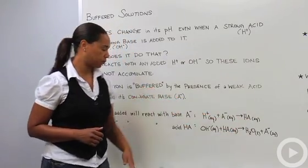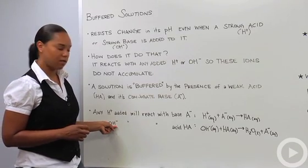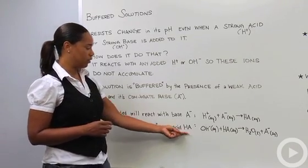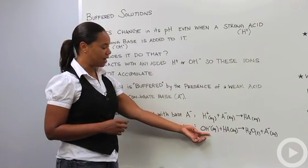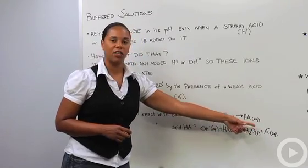Likewise, if you added a strong base that will give you hydroxide ions, then it will react with the weak acid HA. So you have your hydroxide ion interacting with your weak acid to form water and your conjugate base.